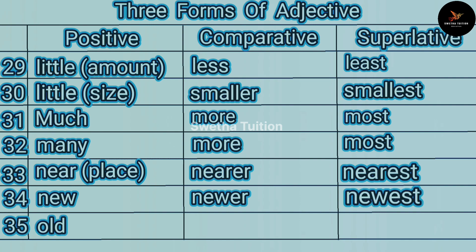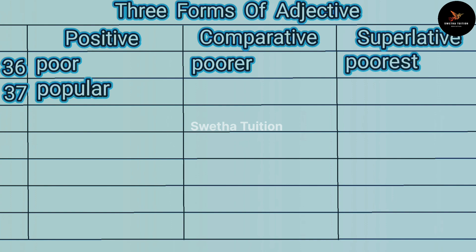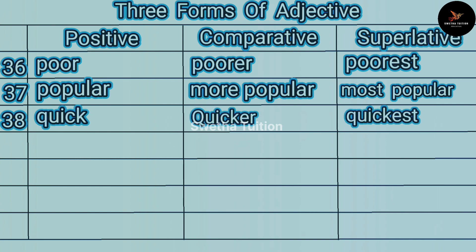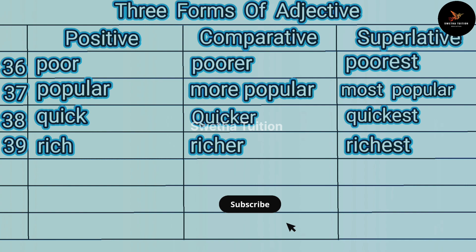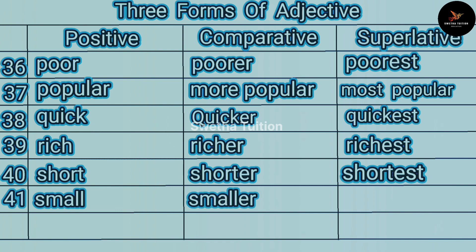Number thirty-five: old, older, oldest. Number thirty-six: poor, poorer, poorest. Number thirty-seven: popular, more popular, most popular. Number thirty-eight: quick, quicker, quickest. Number thirty-nine: rich, richer, richest. Number forty: short, shorter, shortest. Number forty-one: small, smaller, smallest.